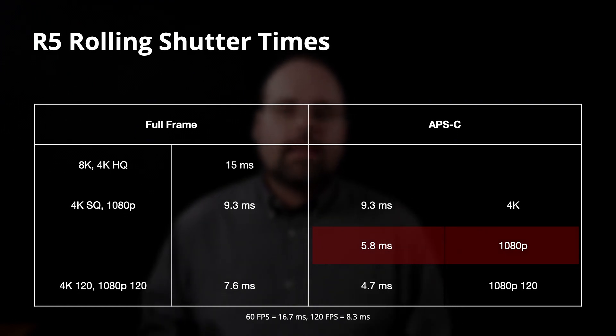Dropping the resolution in APS-C down to 1080p reduces the rolling shutter time to 5.8 milliseconds — clearly line skipped rather than downsampled. Doing the math, line skipping from 5.1K gets you about 1,300 vertical lines, which is then downsampled to the 1080p output, so you actually get good quality. Historically, line skipping was problematic because cameras didn't line skip to a high enough resolution — for example, on a 5D Mark IV shooting 1080p full frame, line skipping produced about 900 vertical pixels scaled up to 1080p. On the R5, the sensor works out to higher than 1080p before downscaling, so you should still get good quality.